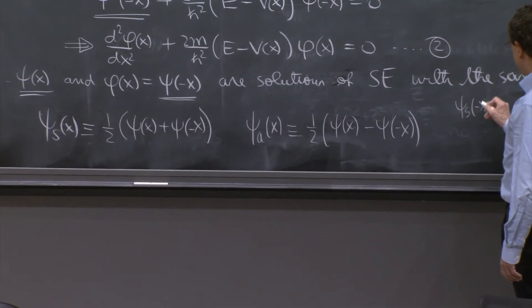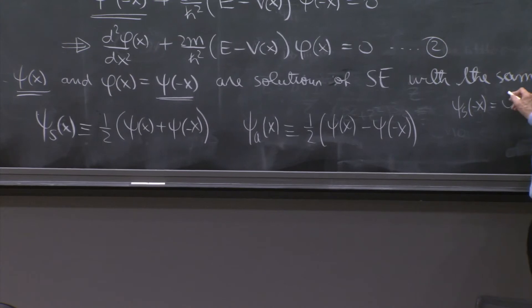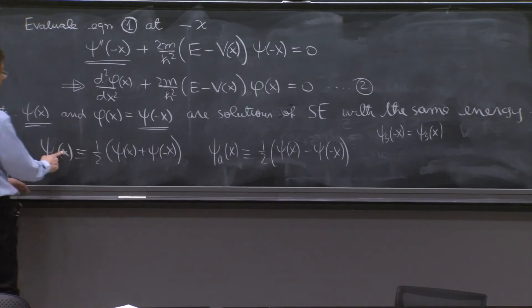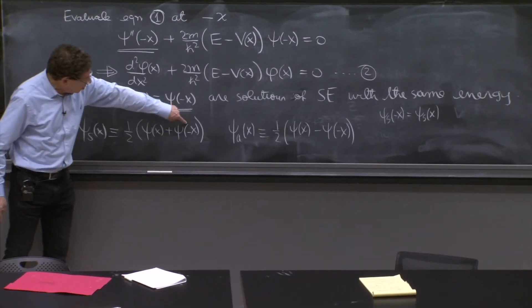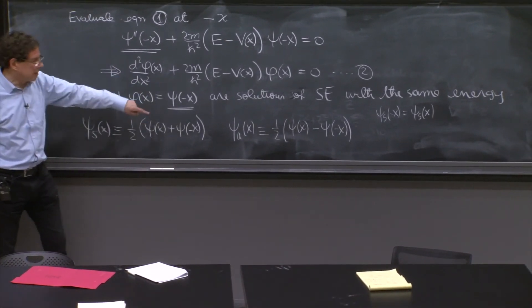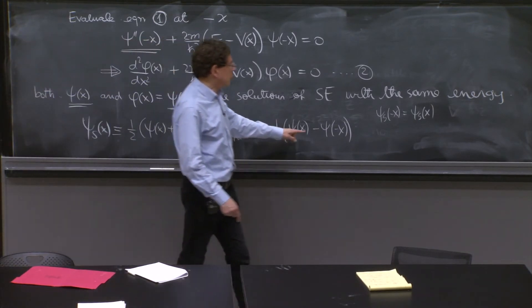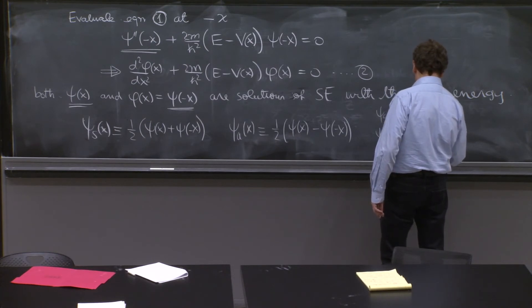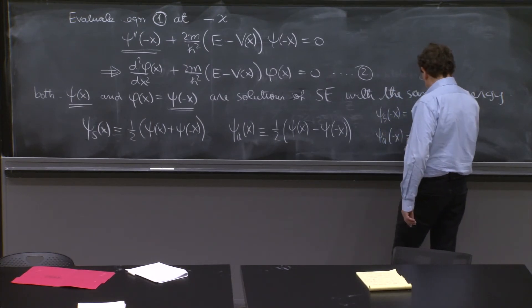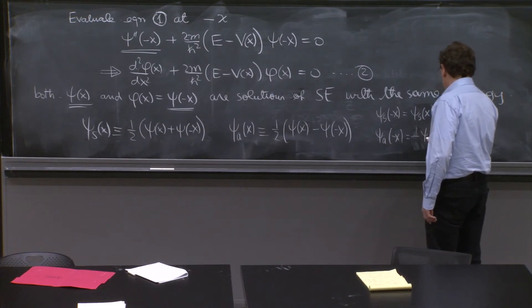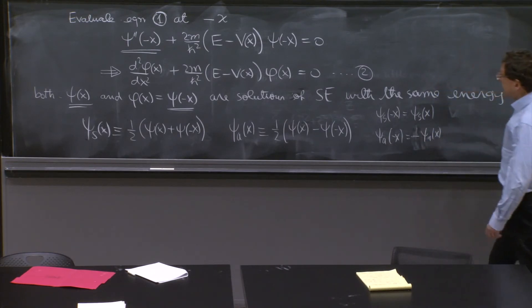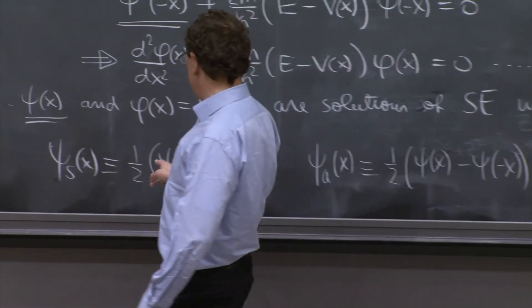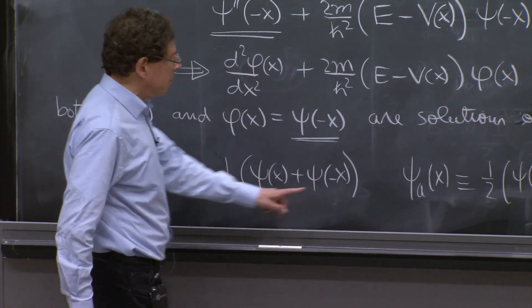And notice that by definition, ψ_s(-x) is indeed ψ_s(x). It's symmetric. If you change x for minus x on the left-hand side, well, this goes into this, this goes into that. So it's unchanged.